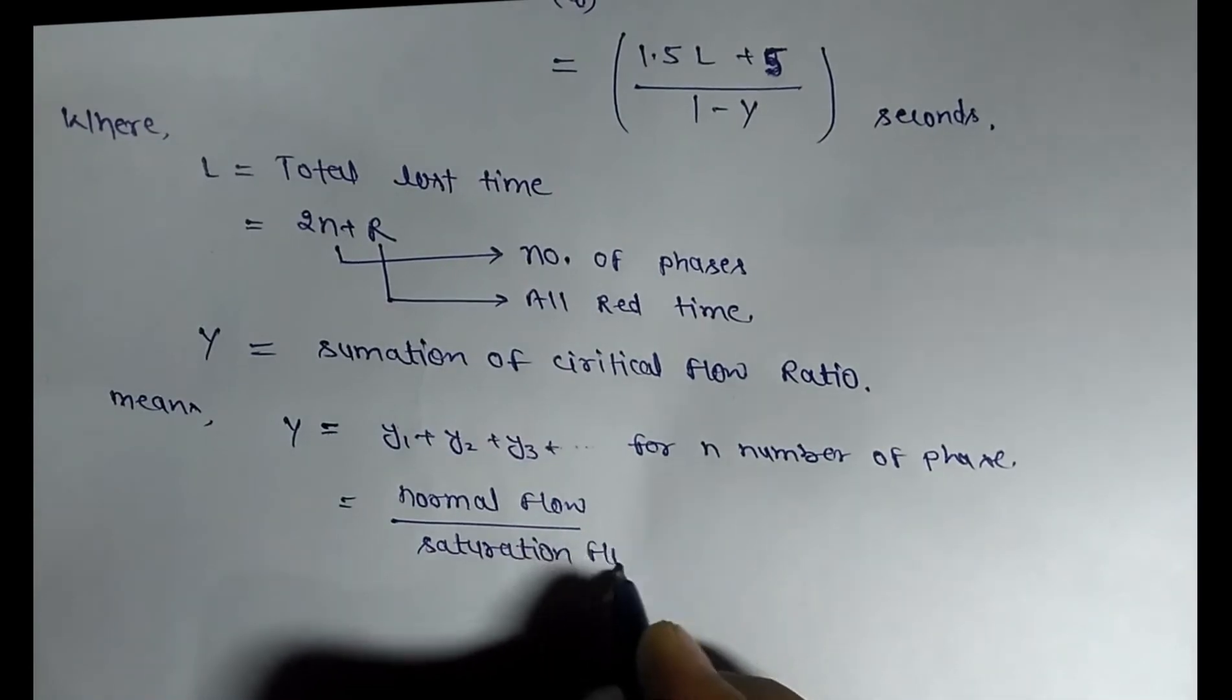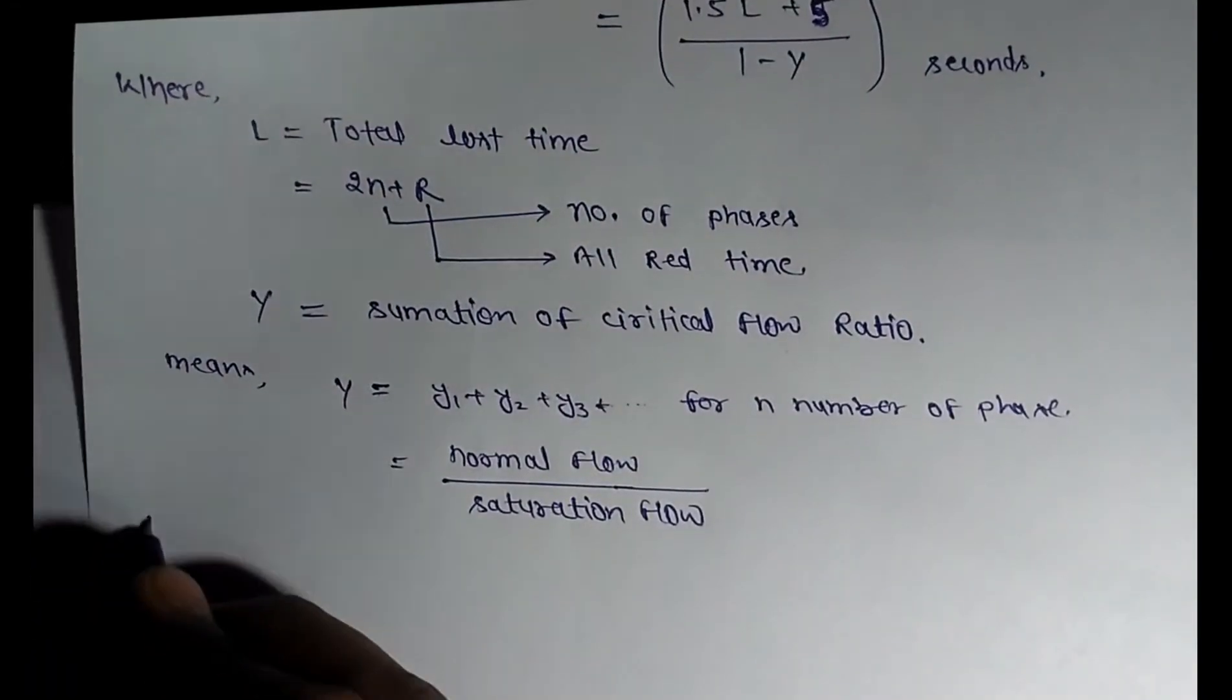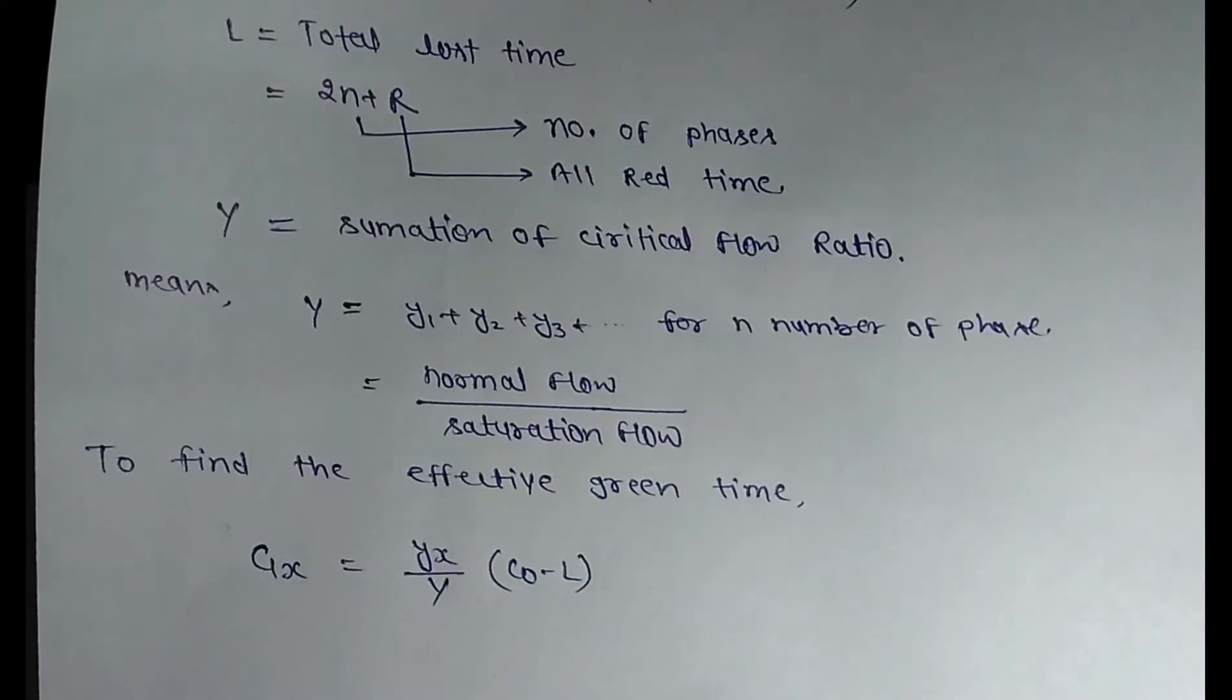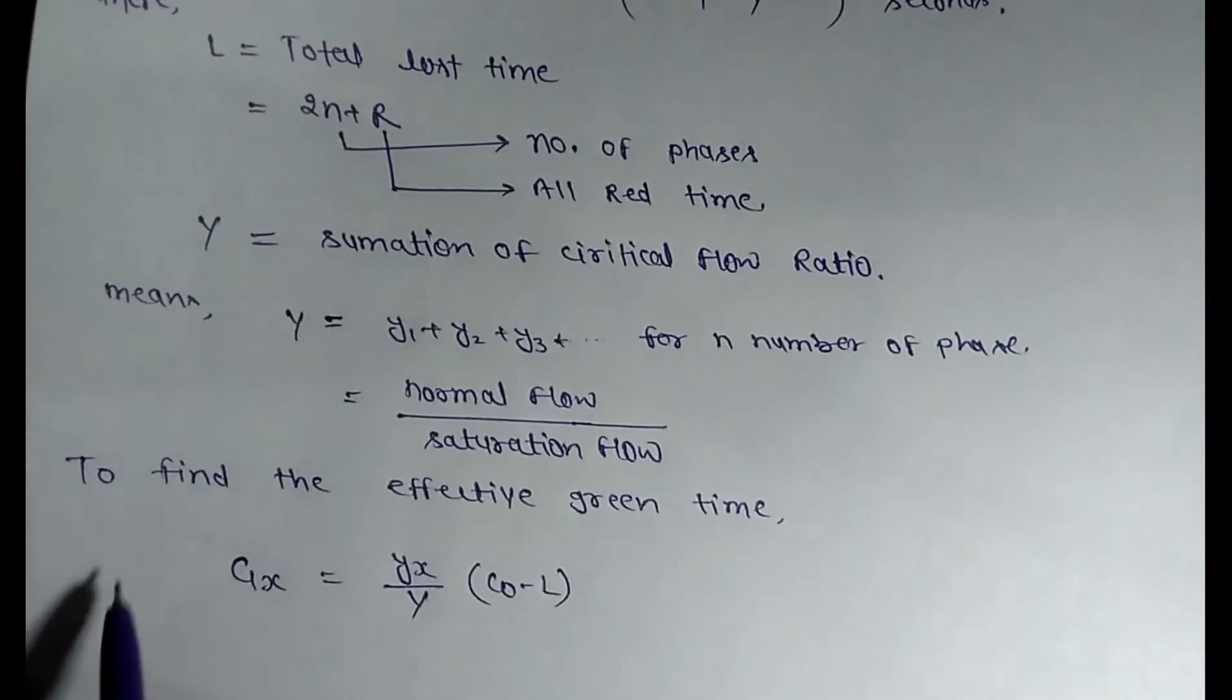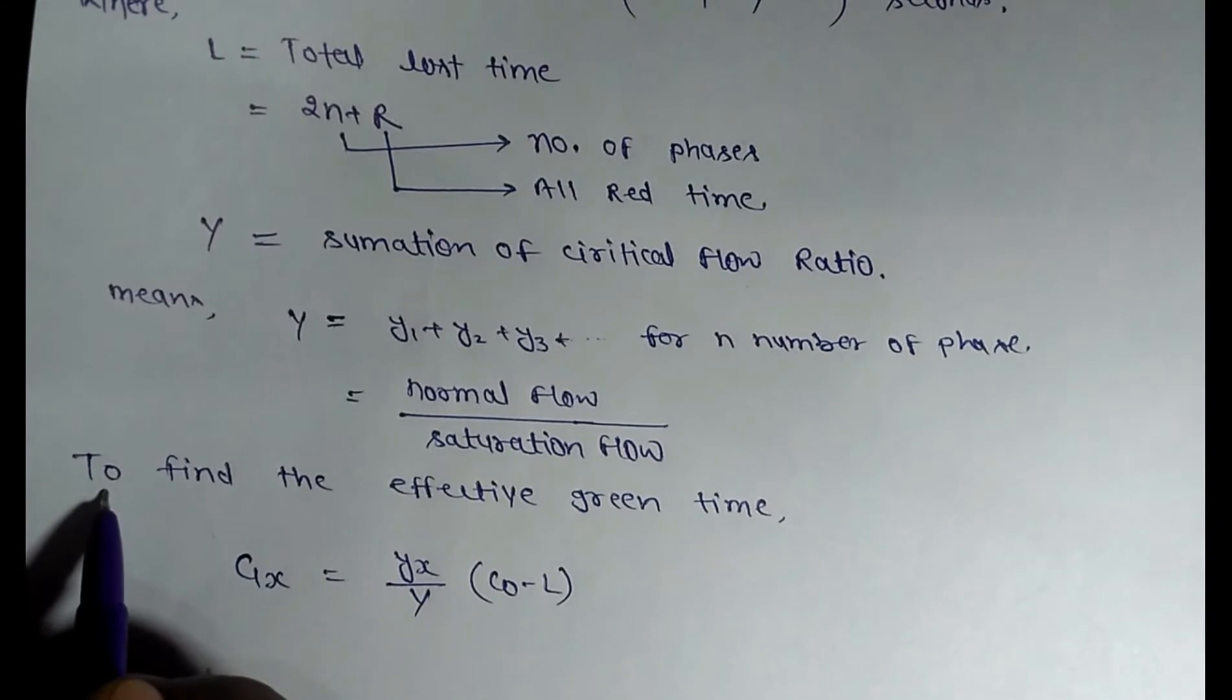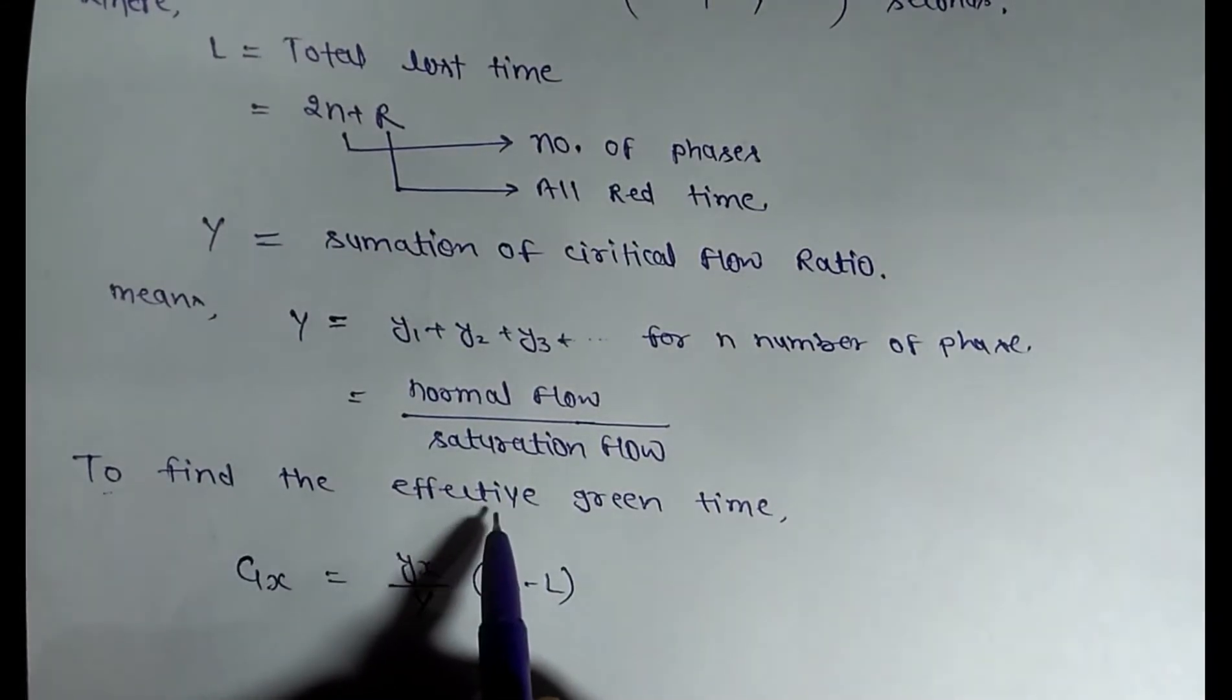We also find the effective green time by using the formula: Gx = (Yx / Y) × (Co - L), where Gx is the effective green time in phase X.